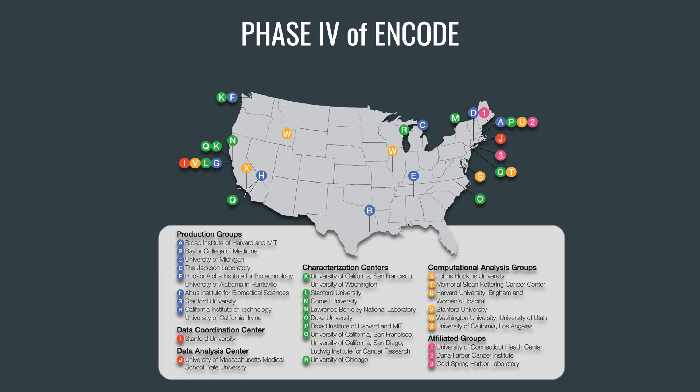We are currently in Phase 4 of ENCODE, and to give you an idea of the scope of this project, this map shows the labs throughout the U.S. belonging to the ENCODE Consortium. An essential aspect of the project is to make all of this data freely available as a resource to the scientific community, including generating tools to interact with the data. This is the job of the Data Coordination Center, or DCC, and the data is made available on a platform called the ENCODE Portal.